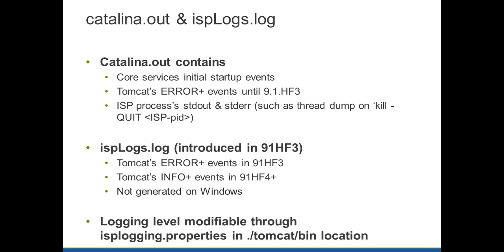I'll briefly go through all the logs related to Informatica services, which should help customers send the right kind of logs to customer support in case there are issues. Catalina.out and isplogs.log: Catalina.out contains core services, initial startup events, and Tomcat errors until 9.1.1. After 9.1.1 HF3, this goes into isplogs.log. The isplogs.log contains Tomcat errors and Tomcat-generated info messages. These can be modified through isplogging.properties, which is in the Tomcat bin location.